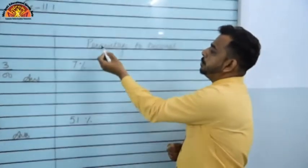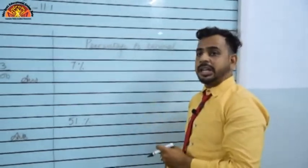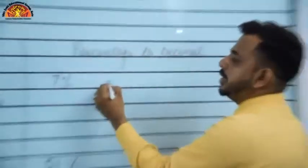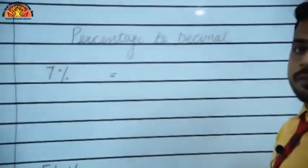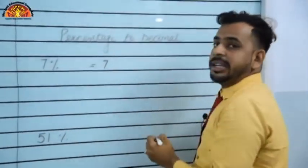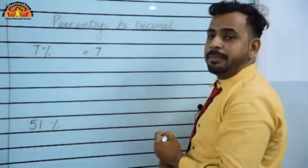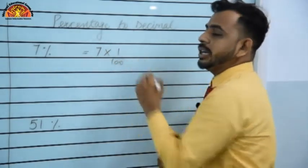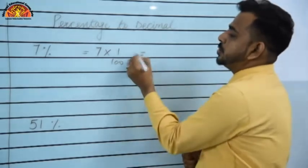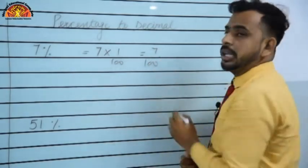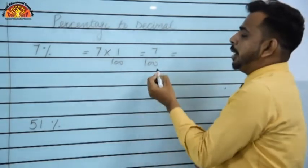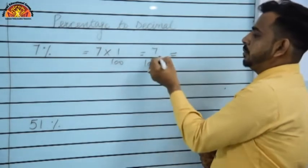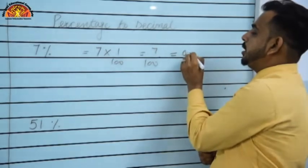Question number 4: converting percentages to decimals. Convert 7%: remove the percentage sign and divide by 100 → 7/100. Converting to decimal: 0.07. This is the answer — decimal form.